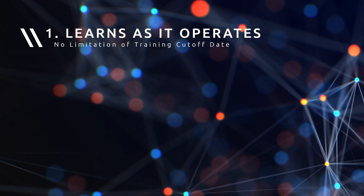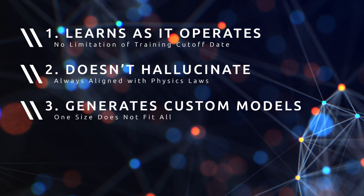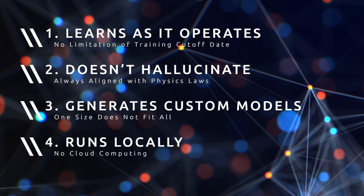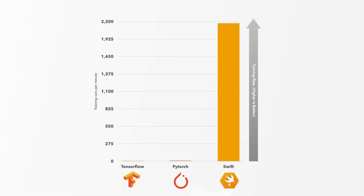The problem is, in order to have an AI powerful enough to do this in real time, it needs massive amounts of computing power. But in order to have an AI automatically operate a building, a few things need to happen: an AI that learns as it operates, doesn't hallucinate, makes custom models for each building, and runs computations from inside the building itself. So PassiveLogic created an AI that takes all of the information within the building — every material, every sensor, the time, the local weather — and compiles it into a custom model for that building. Their AI compiler is over 300 times faster than Google TensorFlow and over 200 times faster than PyTorch.